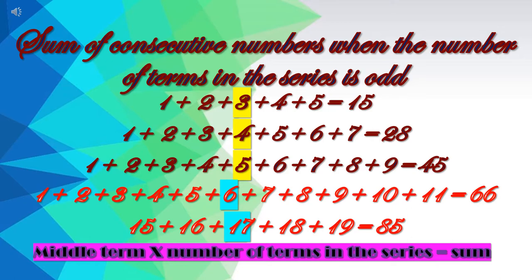Next we will take 7 numbers: 1 plus 2 plus 3 plus 4 plus 5 plus 6 plus 7. These are equal to 28. Their sum is 28.